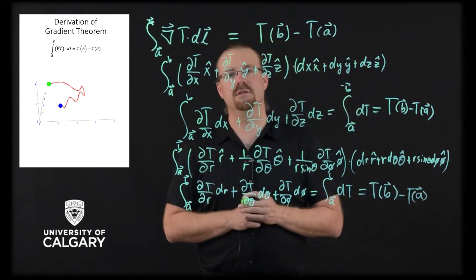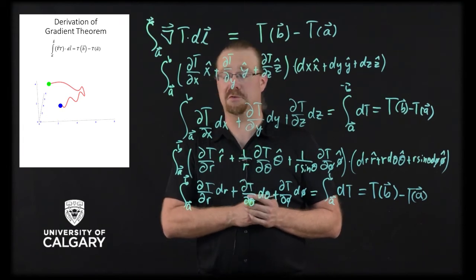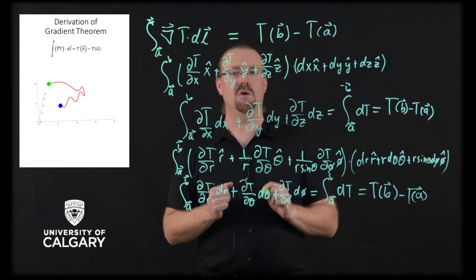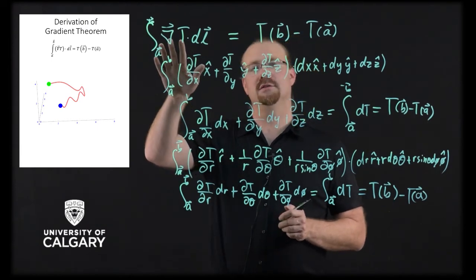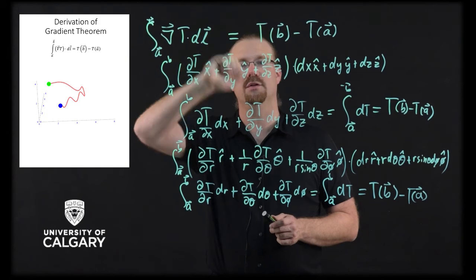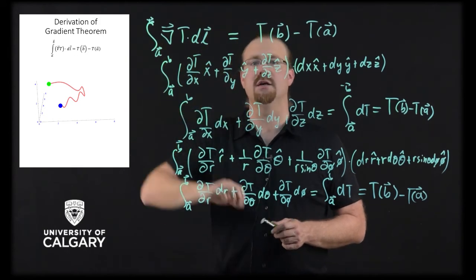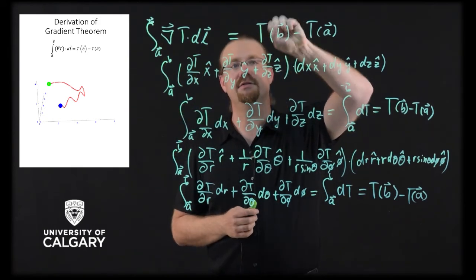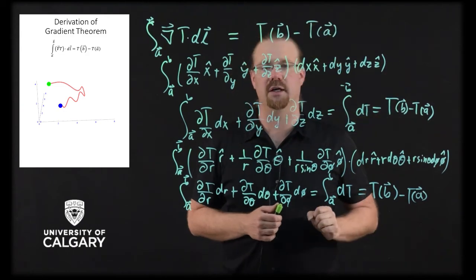The same could be done in cylindrical coordinates. So what this video showed is that when we take the integral of a gradient of a scalar field dotted with dl from a to b, this winds up giving us T evaluated at b minus T evaluated at a.